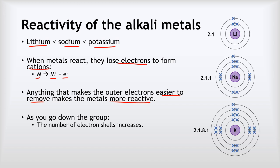Well, first of all, as we go down the group, the number of electron shells increases. We can see that here: lithium at the top of the group has got just two shells, then sodium has got three shells, and potassium has got four shells.